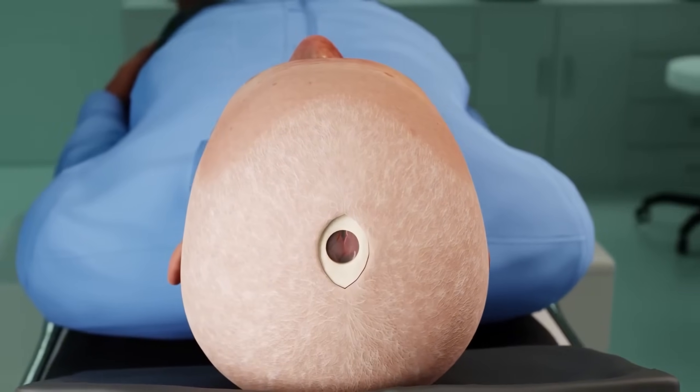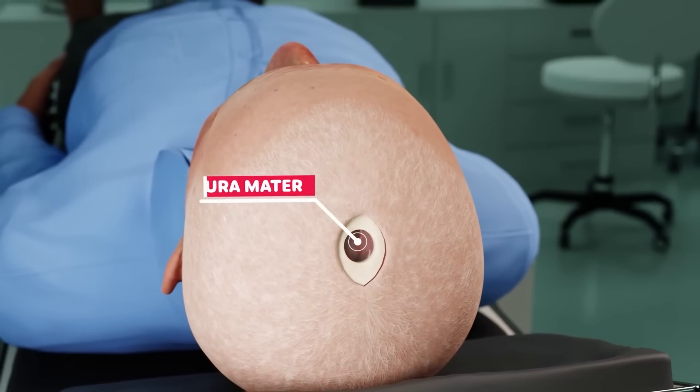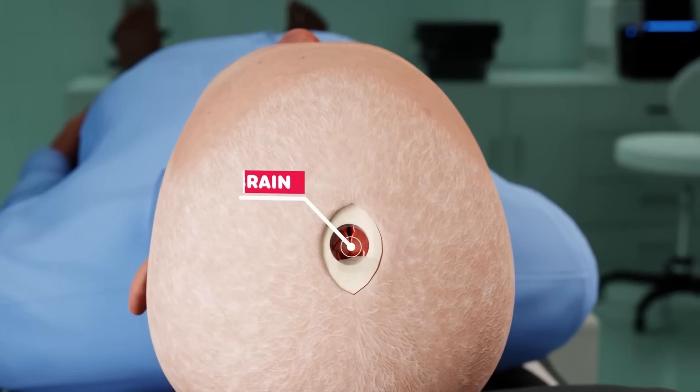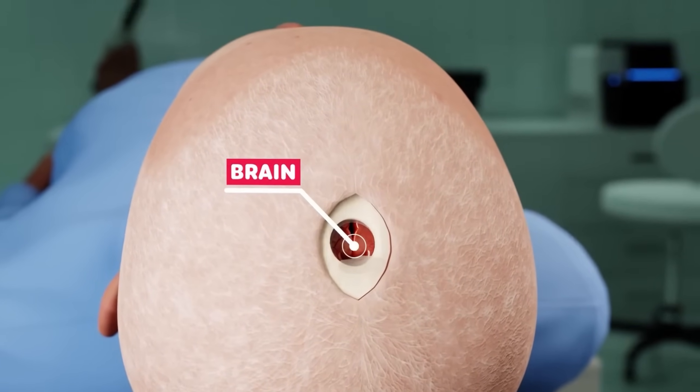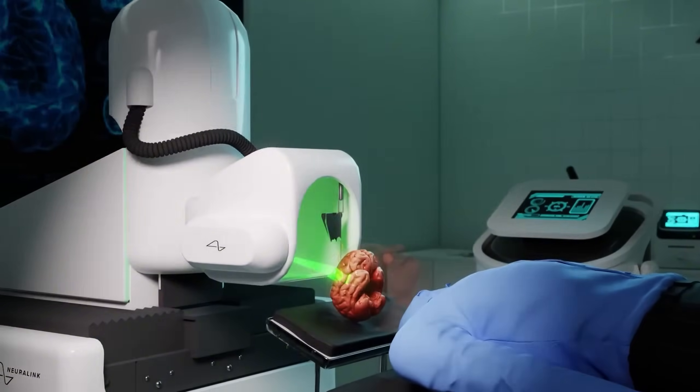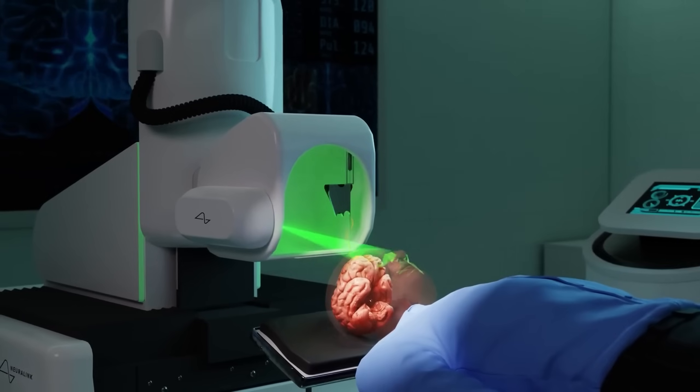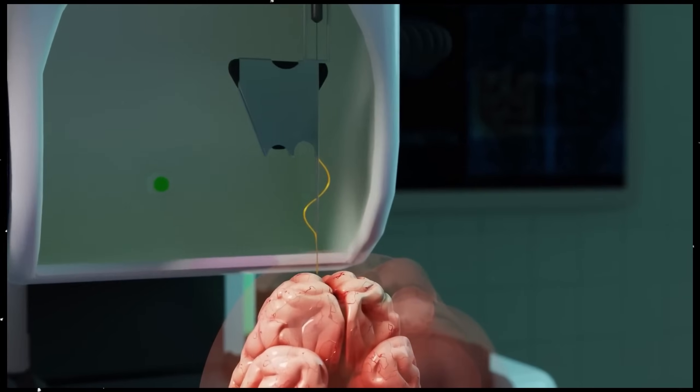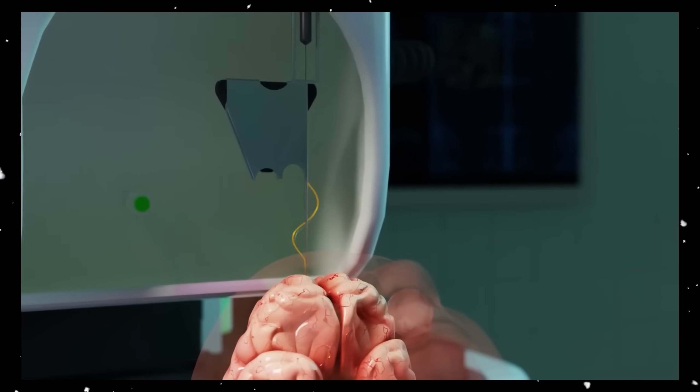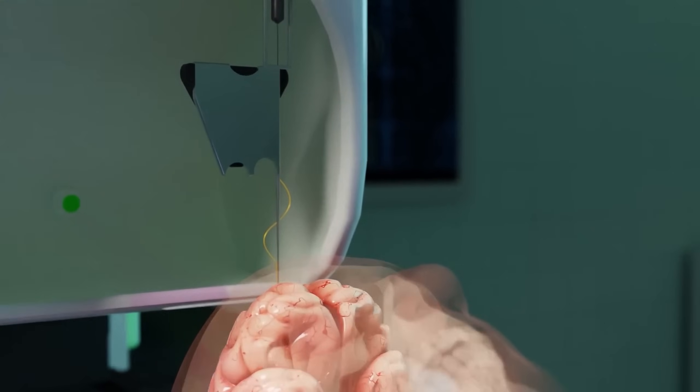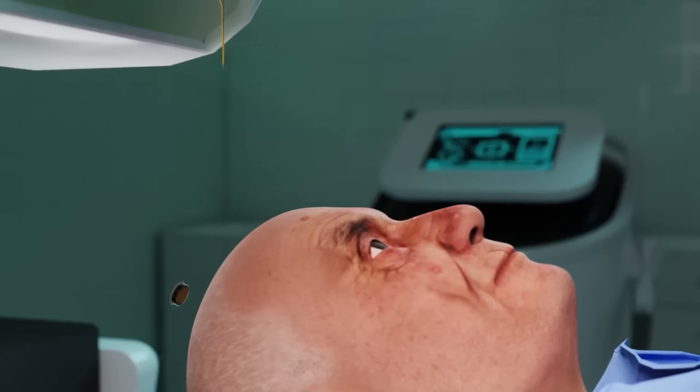Then, they make a small, round hole about one inch across in the skull, take out a piece of bone, and open up the brain's protective layer to show the brain to the Neuralink robot. This robot is really good at its job. It carefully picks up tiny things, much smaller than a hair, called electrodes. Then, it places them into the brain, making sure they go in the exact right spot and at the right depth, without hitting any blood vessels on the brain's surface.